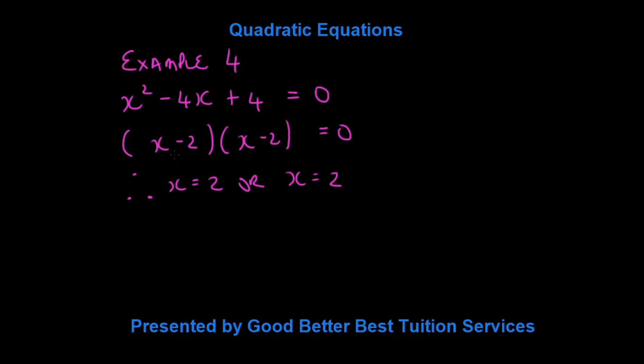it's x minus 2, x minus 2 is equal to 0. It's a binomial squared. Remember we did binomial squareds in products? It's a binomial squared, x minus 2, x minus 2 is equal to 0.